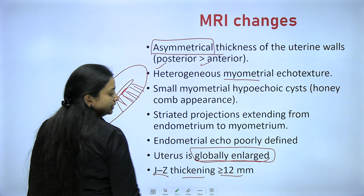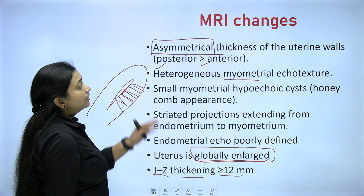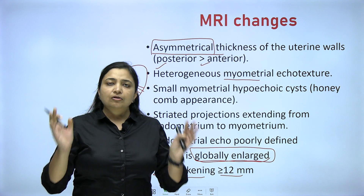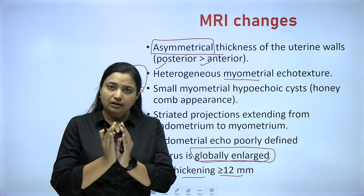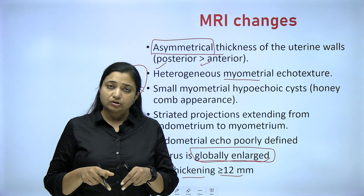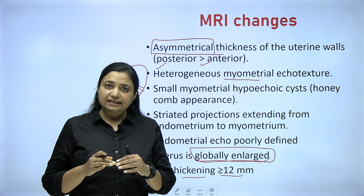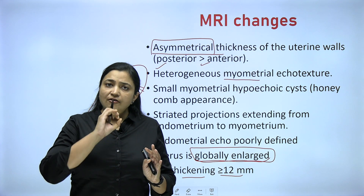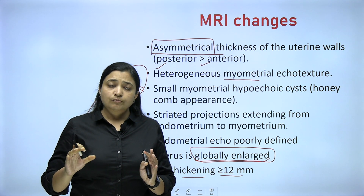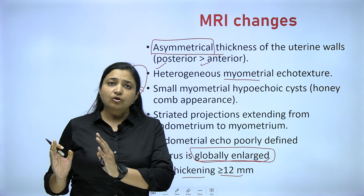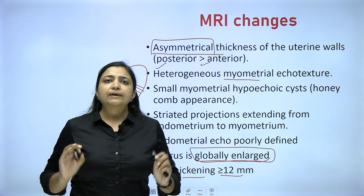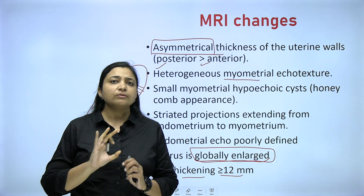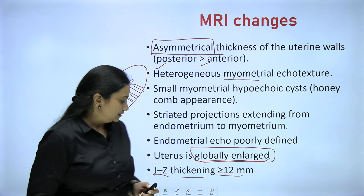The junctional zone (JZ) — the subendometrial lining of the myometrium — is thickened to more than 12 mm. The key things to remember: the subendometrial junctional zone is hazy with heterogeneous echogenicity, fan-shaped lines are seen, the posterior wall is more thickened, and there are myometrial cysts. If you remember these six features, your adenomyosis diagnosis is done.